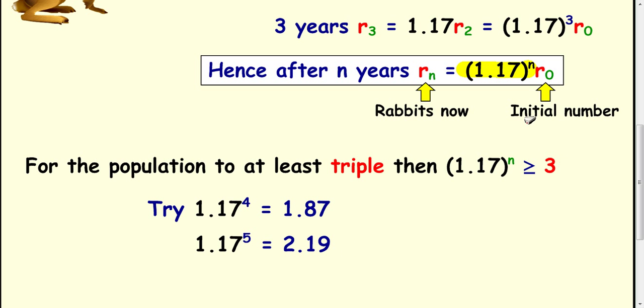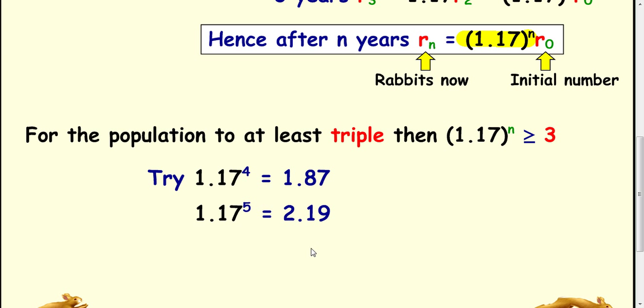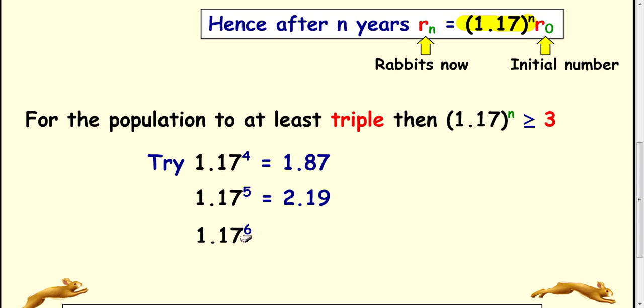The multiplier here is not greater than or equal to 3 so we need to keep going. Let's try 6 and you get 2.57. Again that's smaller than 3. Let's try 7. 1.17 to the power of 7 is equal to 3.